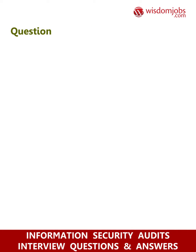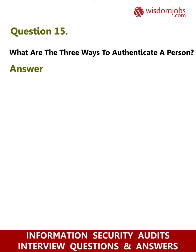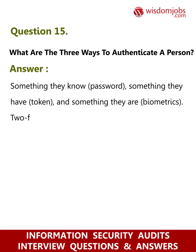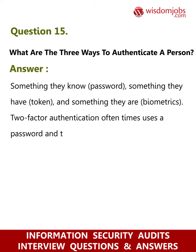Question 15: What are the three ways to authenticate a person? Answer: Something they know — password; something they have — token; and something they are — biometric. Two-factor authentication oftentimes uses a password and token setup, although in some cases this can be a PIN and thumbprint.